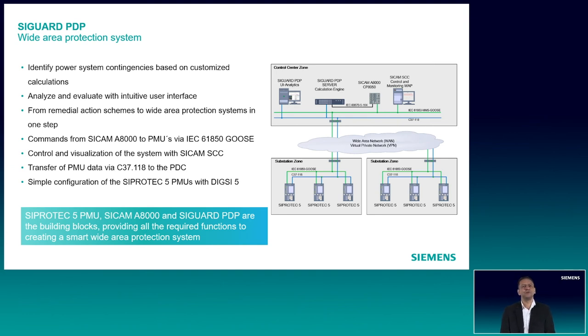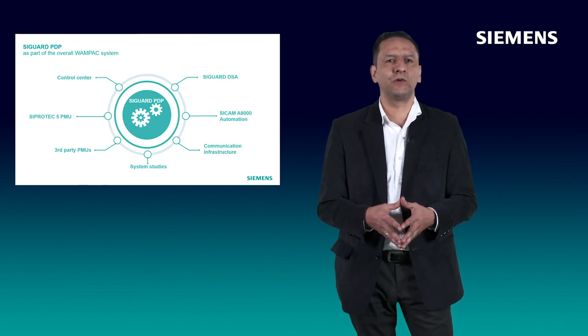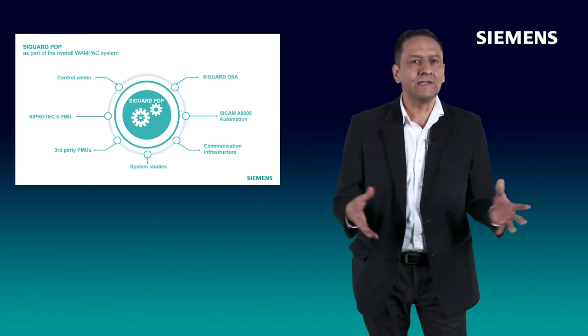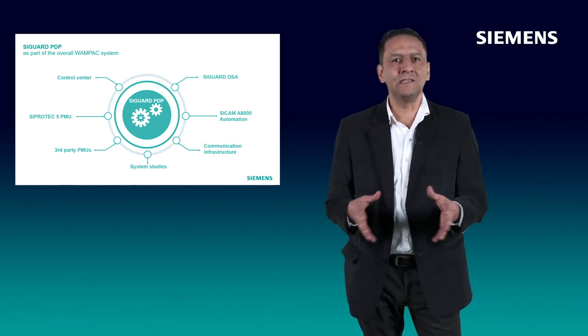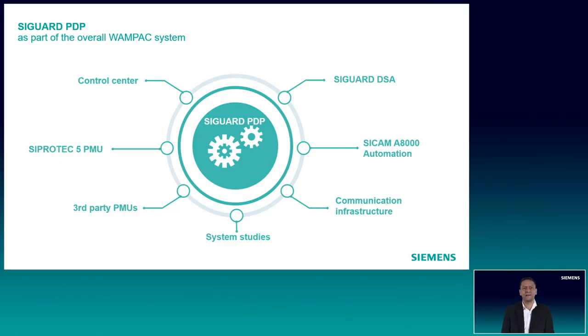To achieve these applications, we use the most powerful devices of our portfolio. Here, SIPROTEC 5 PMUs, SICAM A8000, and SAGUARD PDP are the building blocks providing all the required functions to create a smart Wide Area Protection System. To do an overview related to the most relevant topics to create a Wide Area Protection System, the first one is that we need system studies to identify the contingencies that create stability problems. We also have in our portfolio SAGUARD DSA, an offline tool to do dynamic stability assessment.